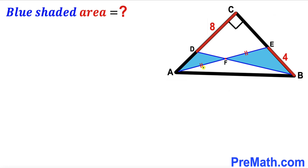Welcome to pre-math. In this video we have got two blue shaded triangles AFD and BFE fully confined in a right triangle ABC, as you can see in this diagram, such that segment AF is equal to segment EF.